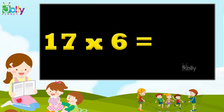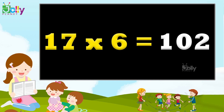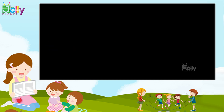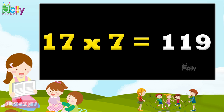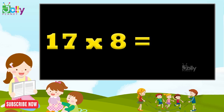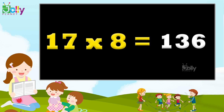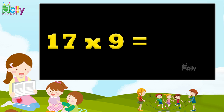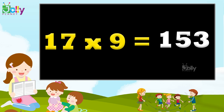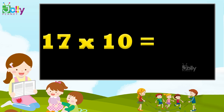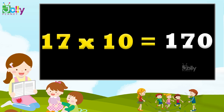17 sixes are 102, 17 sevens are 119, 17 eights are 136, 17 nines are 153, 17 tens are 170.